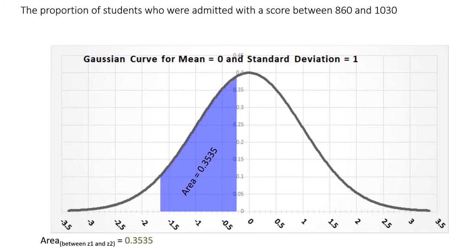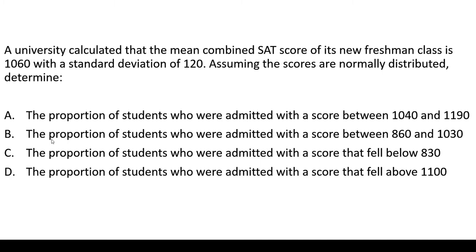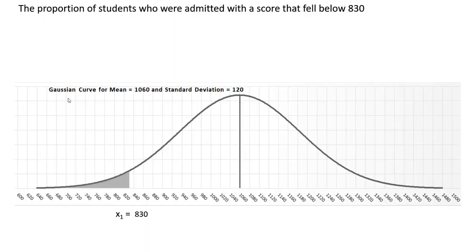Let's go to Part C. Part C wants to know the proportion of students who were admitted with a score that fell below 830. Notice there are not two x-values here. There's only one x-value, and that one x-value is this 830 right over here. Let's see what this looks like on a normal curve. On the original Gaussian curve with a mean of 1060 and a standard deviation of 120, we want to know the area to the left of 830, meaning all the students who were admitted that fell below a score of 830.